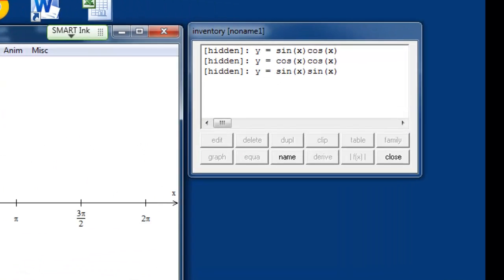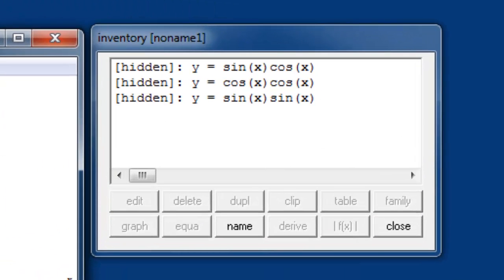Here I've input the three graphs, sine x times cosine x, cosine x times cosine x, and sine x times sine x. So let's start with sine x times cosine x and see what the graph looks like.